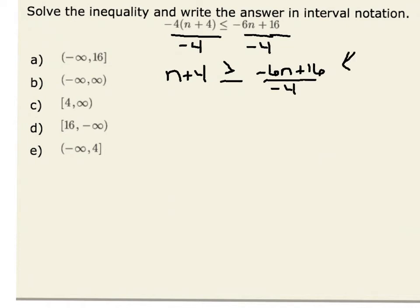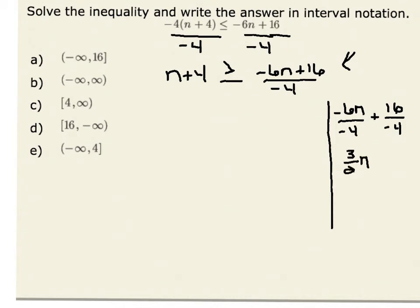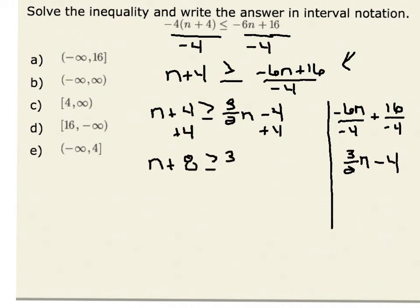We could simplify the right-hand side. Negative 6n plus 16 all over negative 4 is the same as negative 6n divided by negative 4 plus 16 divided by negative 4. Negative 6n divided by negative 4 is the same as 3 halves n, and 16 divided by negative 4 is negative 4, giving us the right-hand side as 3 halves n minus 4. Now I could go ahead and isolate my variable on one side of the inequality. I could add 4 to both sides.